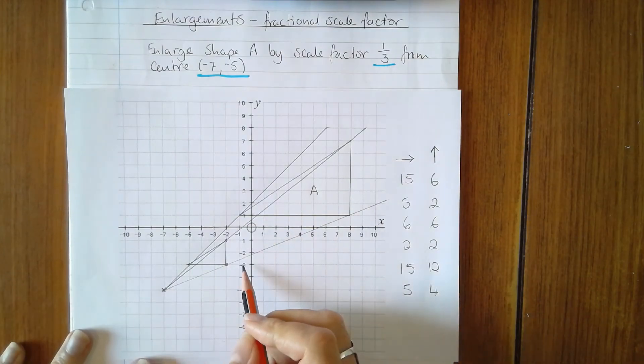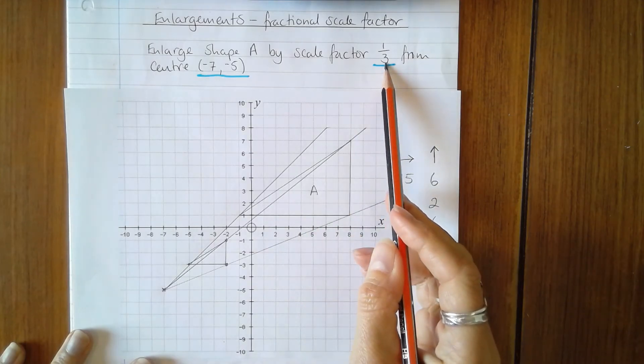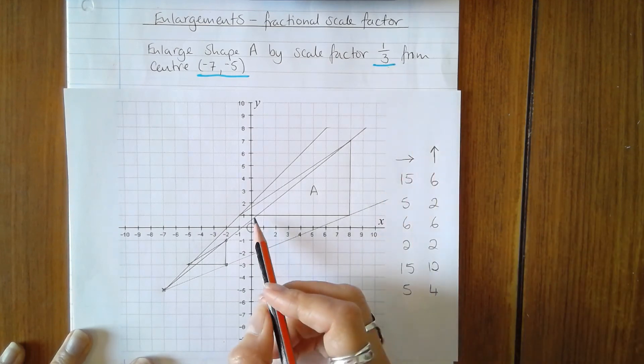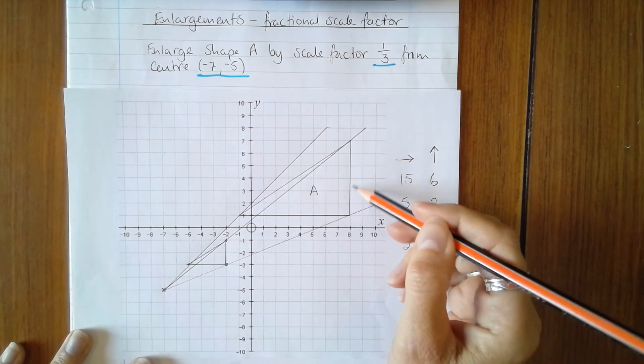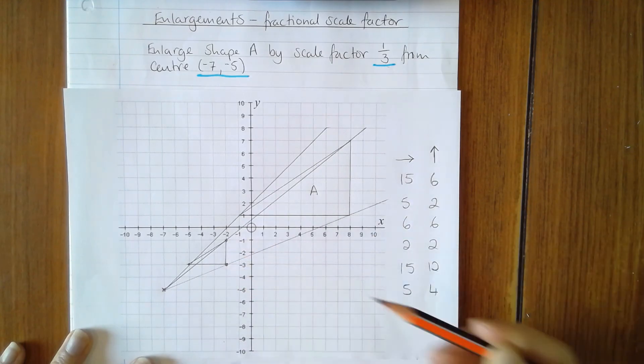If you want to check whether the enlargement is correct, you need to check that each of the sides, or one of the sides at least, on the new shape is 1/3 of the sides on the old shape. So this is 6 units high, divide that by 3, this is 2 units high.